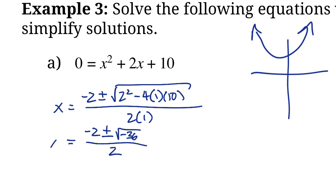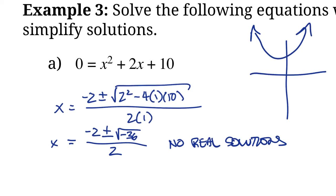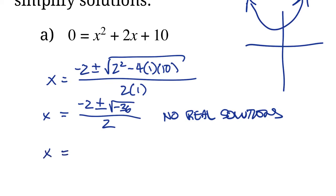This is the point where if we were solving this as a regular equation, we'd say no real solutions, because the thing underneath the square root is negative. But now we know we can do a little trick that enables us to solve for the complex solutions. We can pull that negative out from under the radical as an i. The square root of 36 is 6, the square root of negative 1 is i, so we get plus or minus 6i over 2. Dividing everything by 2, we just get negative 1 plus or minus 3i.